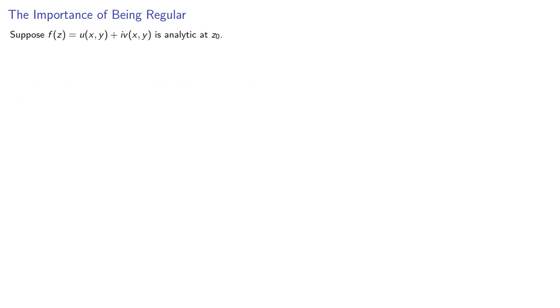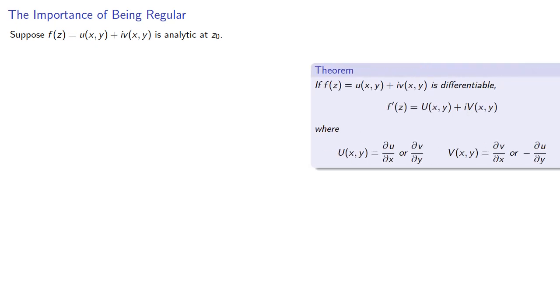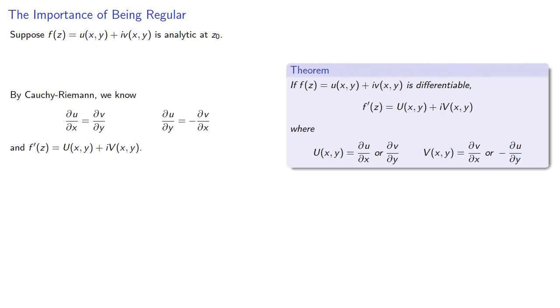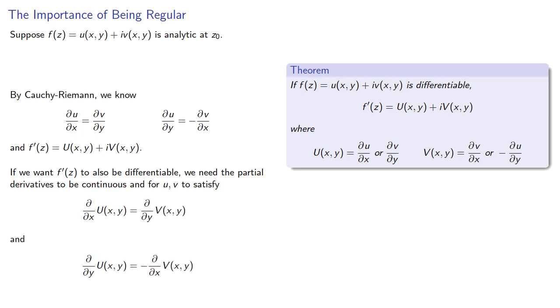So let's suppose our function is split into its real and complex parts, and suppose it's analytic at some point. By the Cauchy-Riemann equations, we know the relationship between the derivatives and an expression for the derivative itself. If we want f prime to also be differentiable, we need the partial derivatives to be continuous and for u and v to satisfy the Cauchy-Riemann equations.